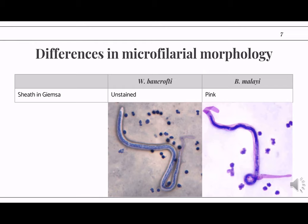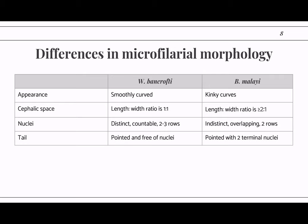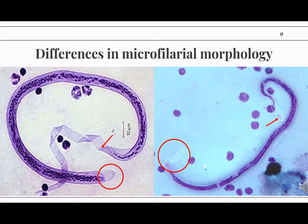The body of Wuchereria exhibits smooth, graceful, continuous curves. Meanwhile for Brugia, the worm can be seen as having more and angular curves along its body. The cephalic space of Wuchereria is as tall as it is wide. For Brugia, the cephalic space is at least two-to-one, meaning the area is taller than it is wide. Lastly, there are no nuclei at the tip of the tail for Wuchereria, but for Brugia there are two distinct terminal nuclei.